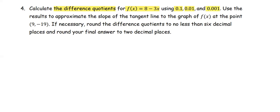Use the results to approximate the slope of the tangent line to the graph of f(x) at the point (9, -19). If necessary, round the difference quotients to no less than 6 decimal places and round your final answer to 2 decimal places.